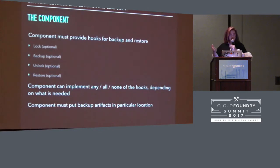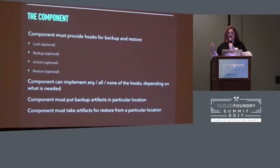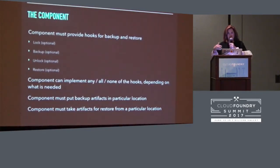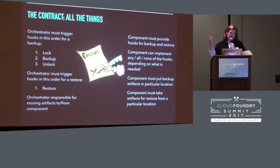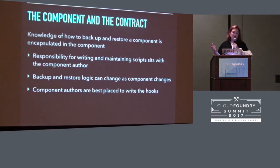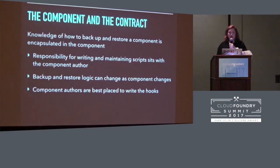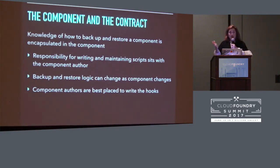The component has to put the backup artifact in a particular location so that the orchestrator can find it, and take artifacts to be restored from a particular place so that it can be received from the orchestrator. It's a pretty simple contract. The contract separates backup orchestration from the actual backup and restore logic. The backup hooks are written by component authors who are best placed to determine which parts of component state are relevant for a backup, and what the correct behavior for a backup and restore is. Because the hooks are packaged with the component, they can change as the component changes, so they should never be out of sync with how the data is stored. You'll see that the contract addresses the fragility and compatibility issues we saw with tools that reach under the hood, by encapsulating the backup and restore knowledge in the component.